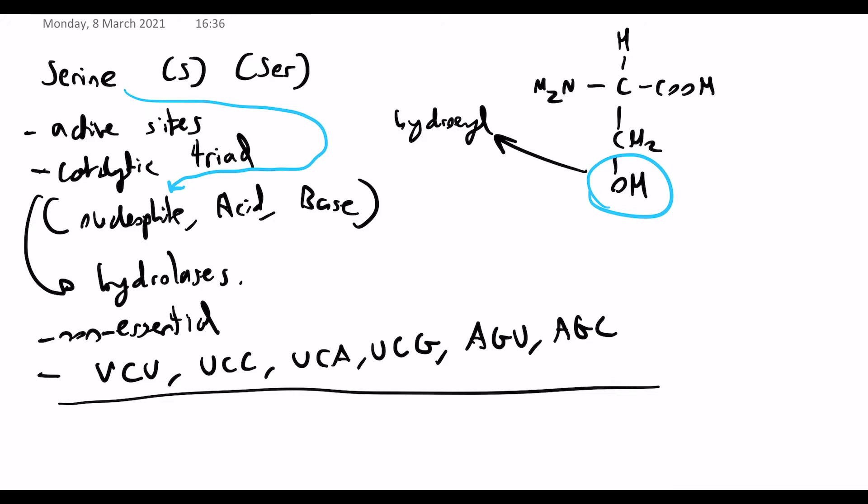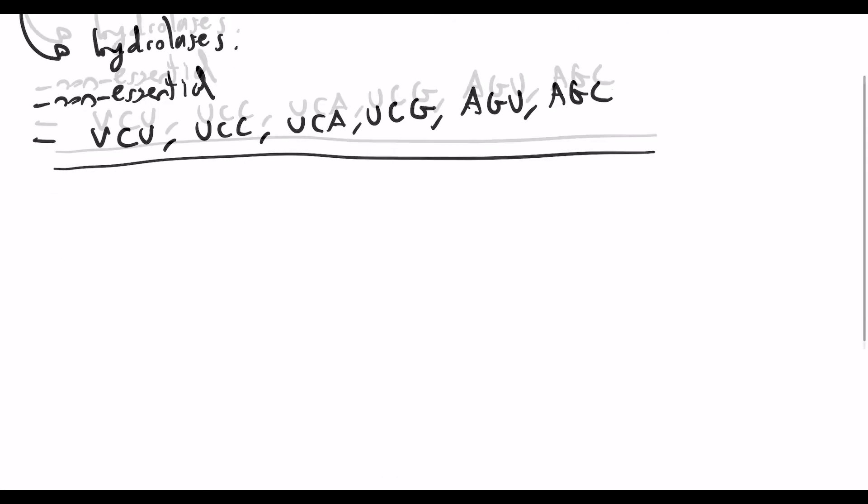Okay, let's move on to threonine. Okay, so threonine is actually quite a bit like serine. Its one-letter amino acid code is T, or its three-letter is just thr. And we'll draw the structure out on the right again.